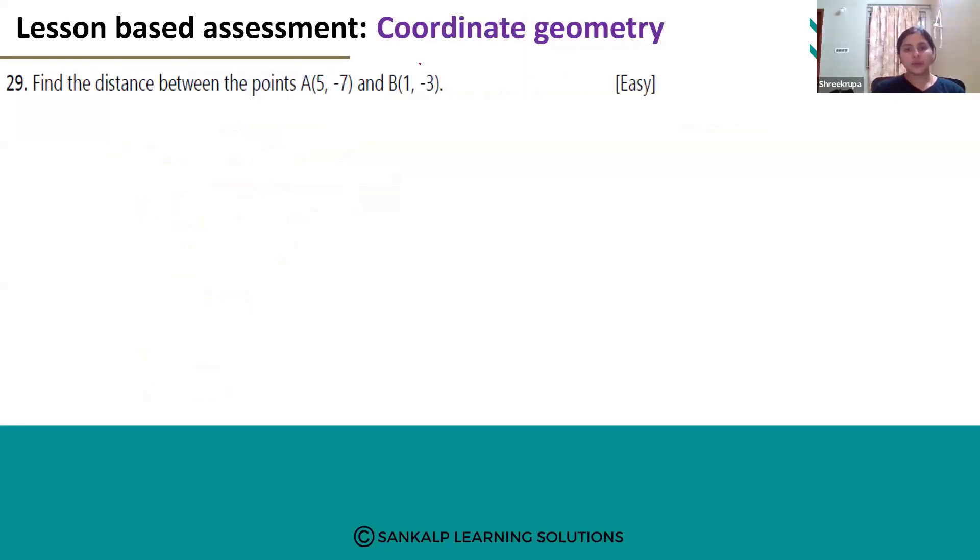Hello everyone, let's look at question number 29. Find the distance between the points A(5, -7) and B(1, -3).